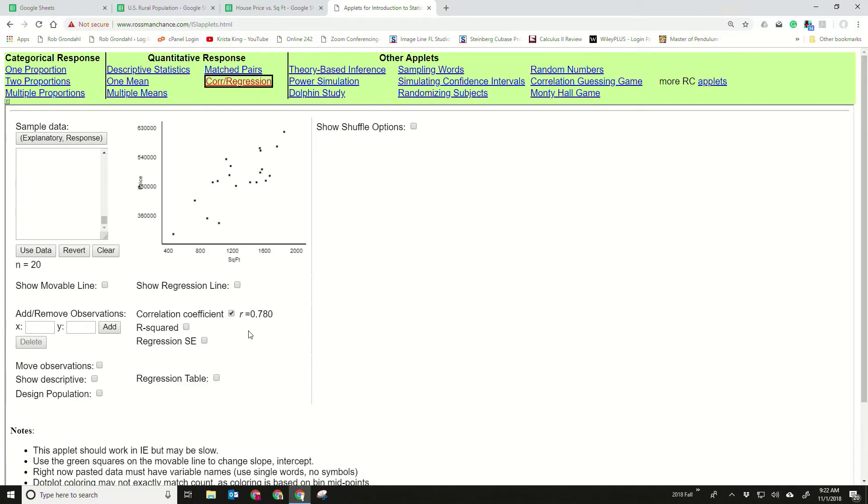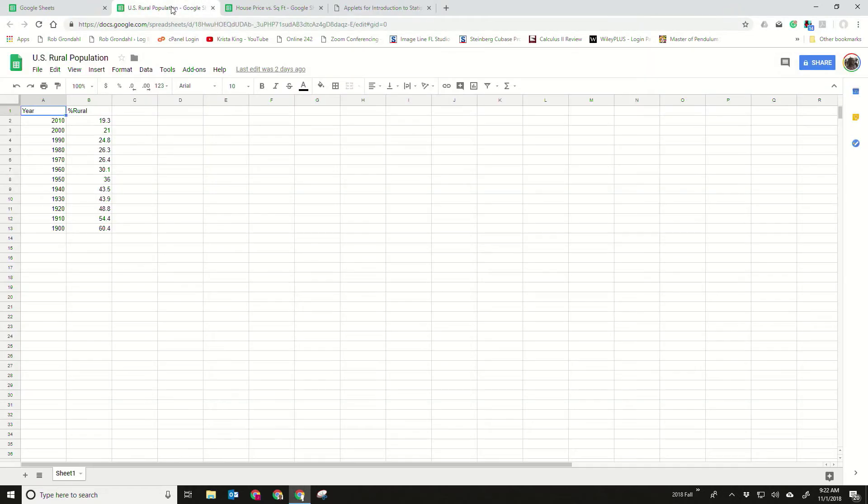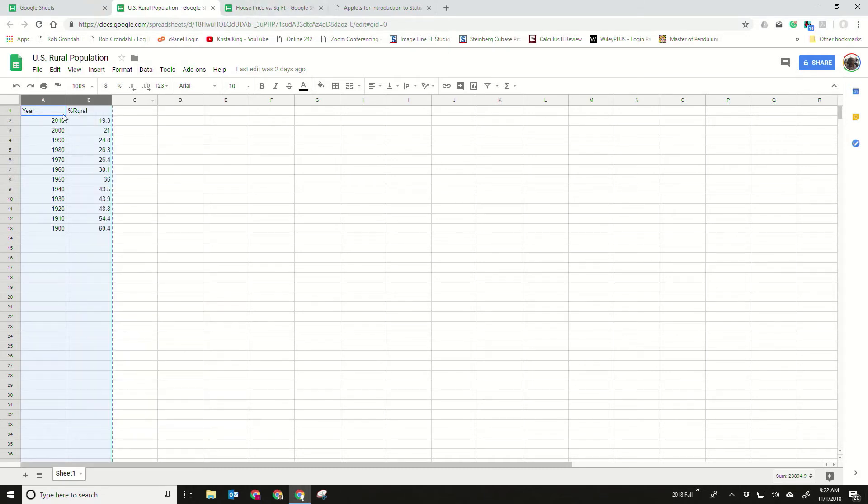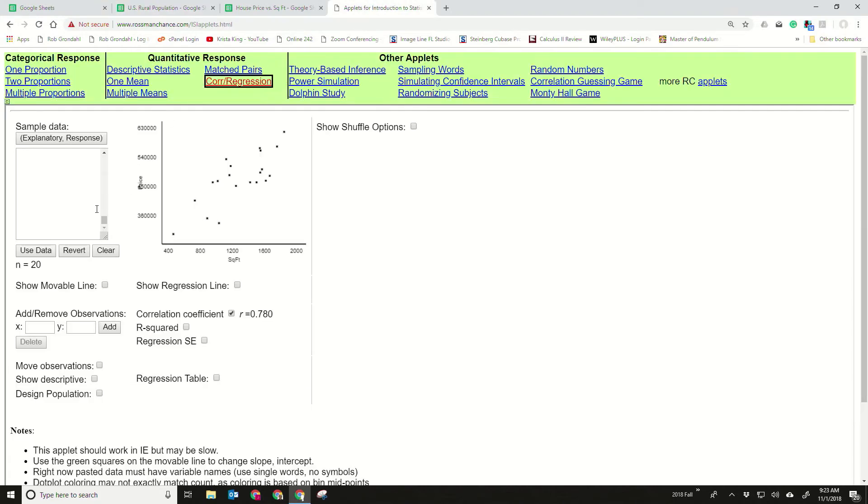Let's look at a set of data that has a negative correlation. What this is showing is year here and then the percent of the U.S. population that lived in a rural area.